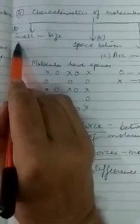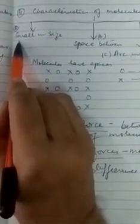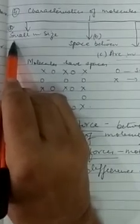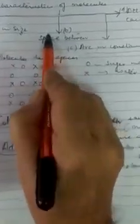The first is that the molecules are very small in size. That is, the size of molecule is nearly 10 to the power minus 10 meters. It is so small that it cannot be seen even with the help of a microscope.